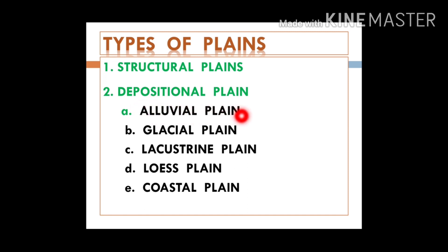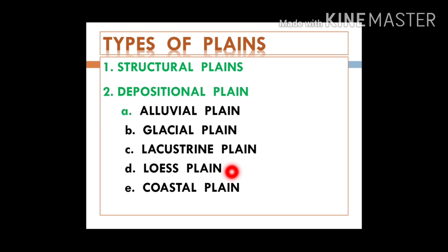The depositional plains are of different types: alluvial plains formed by the action of rivers; glacial plains formed by the action of glaciers; lacustrine plains formed when sedimentation takes place in a lake; loess plains formed by the action of wind; and coastal plains formed by the action of waves.